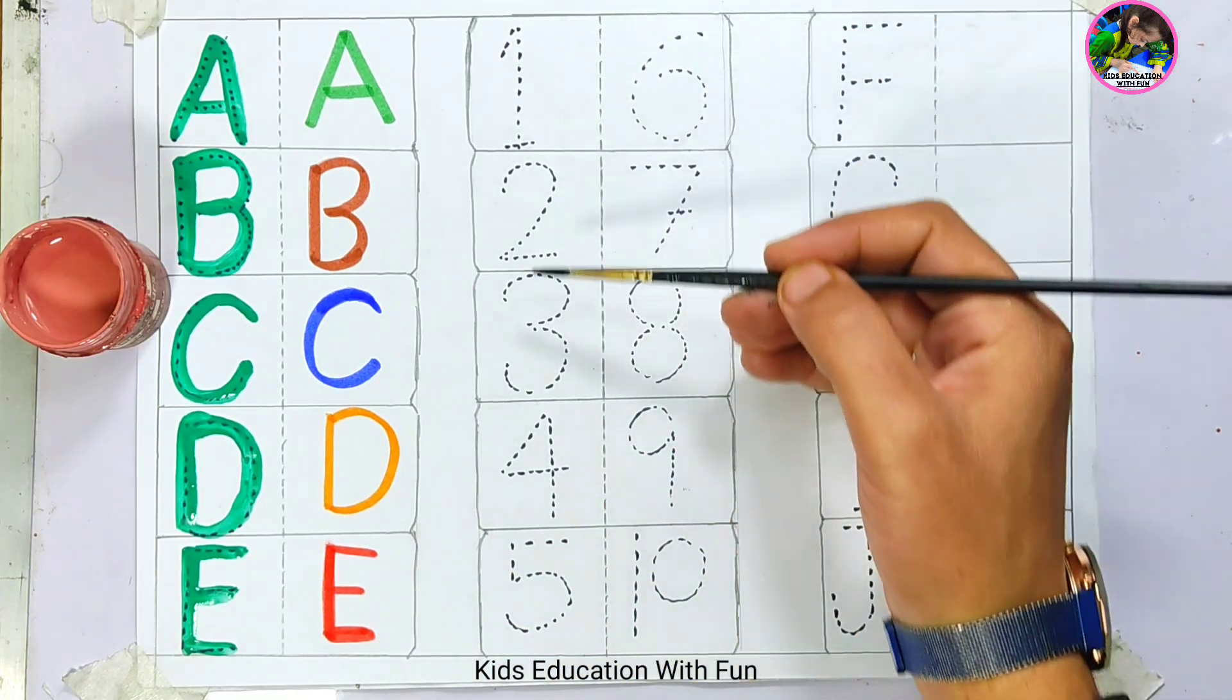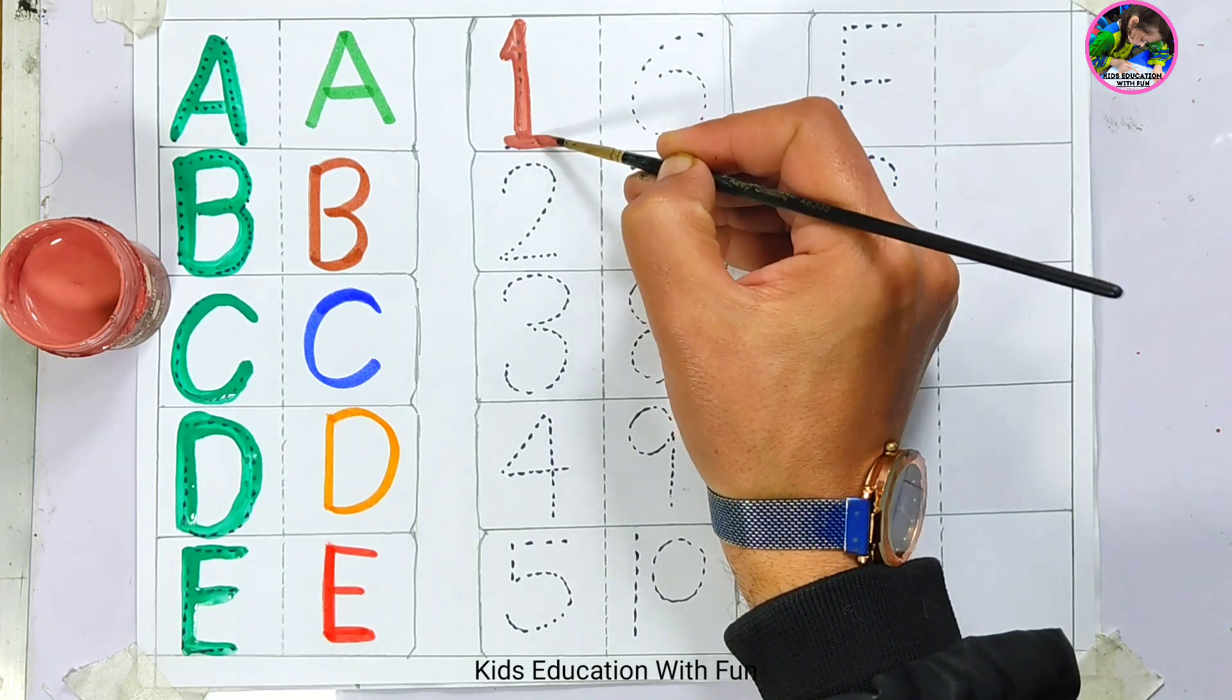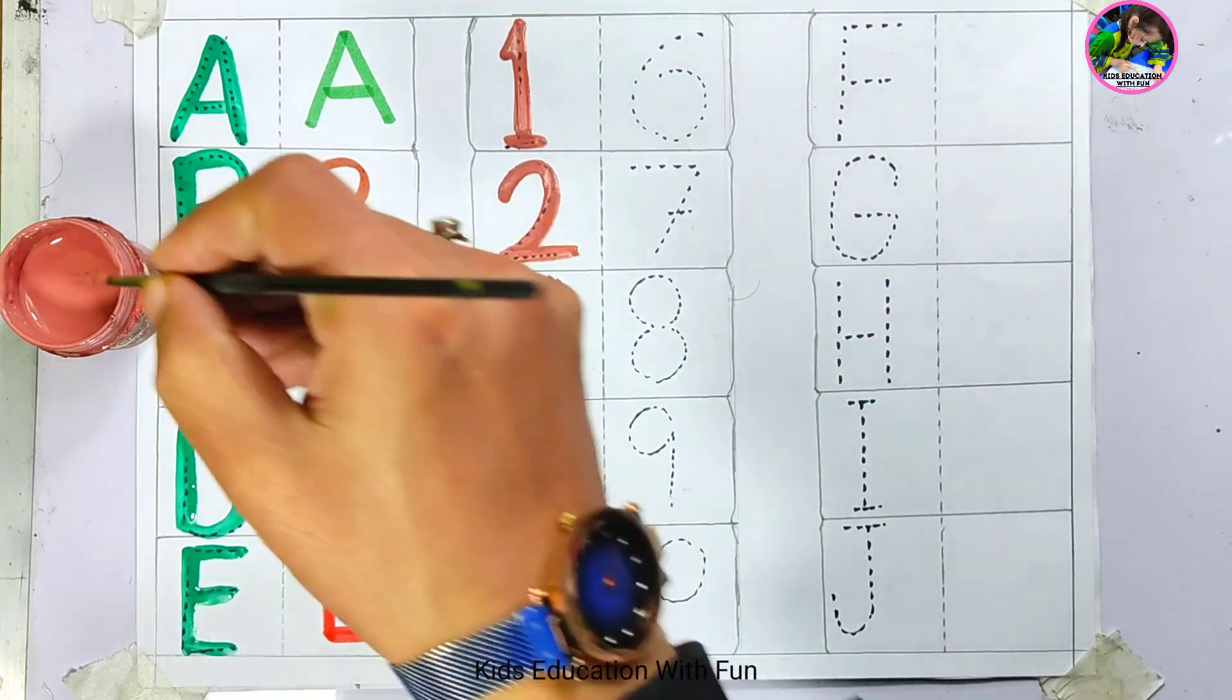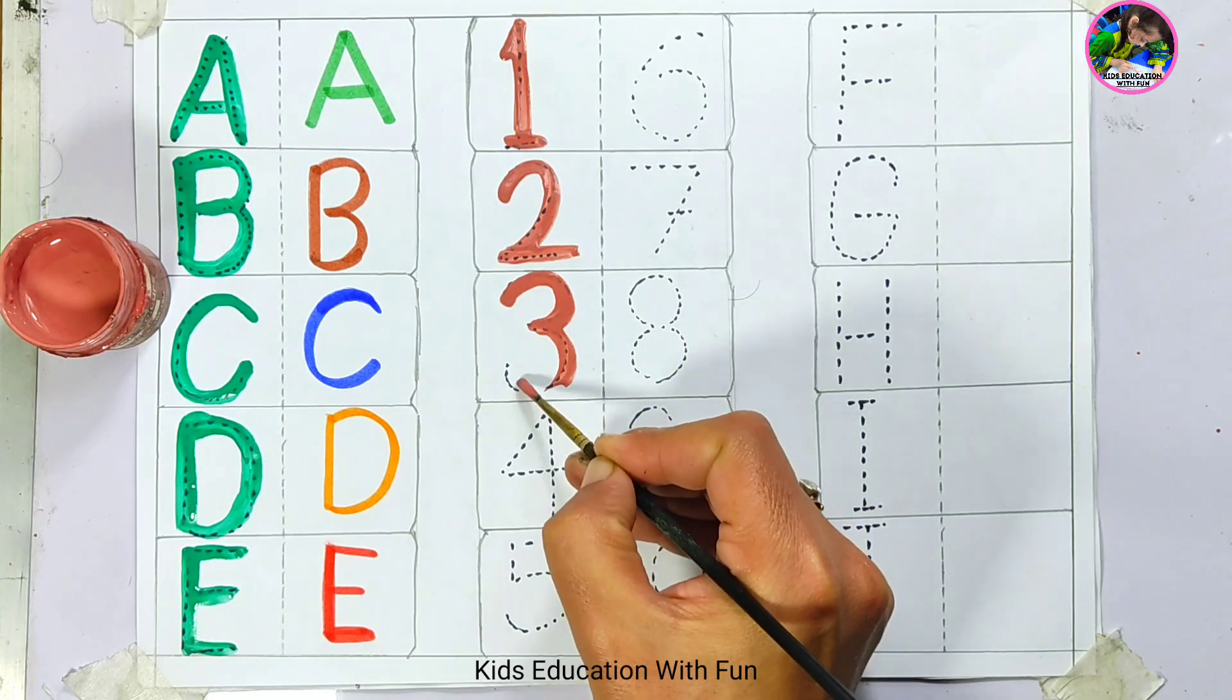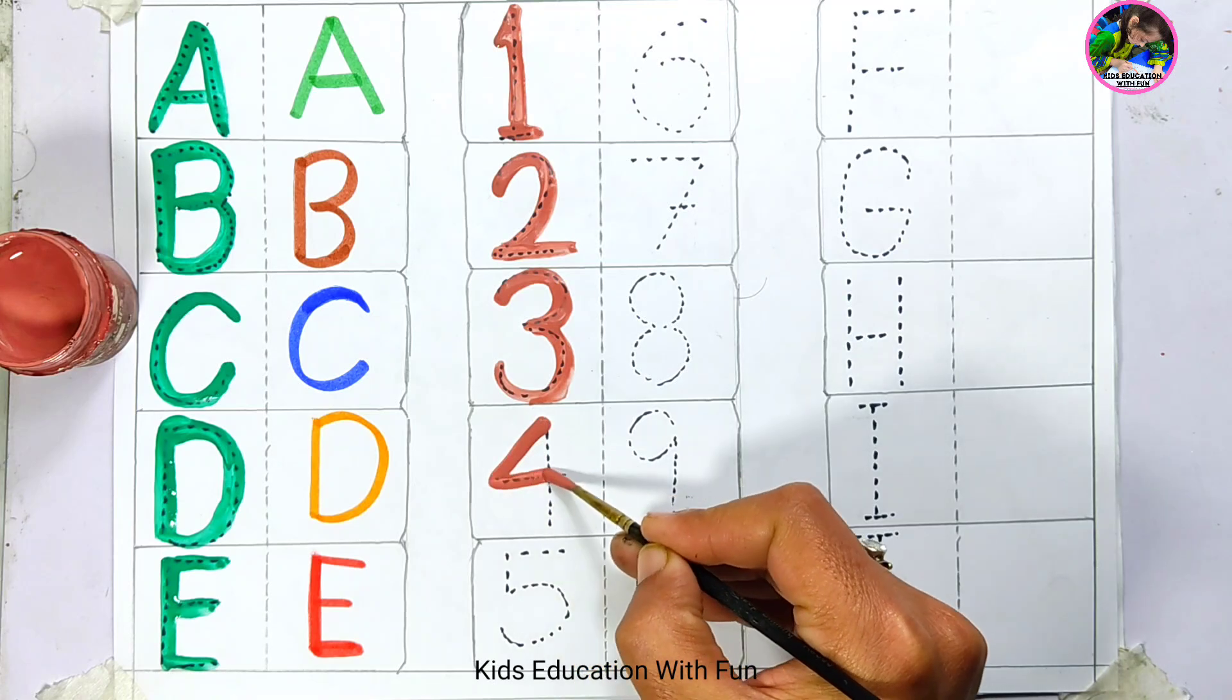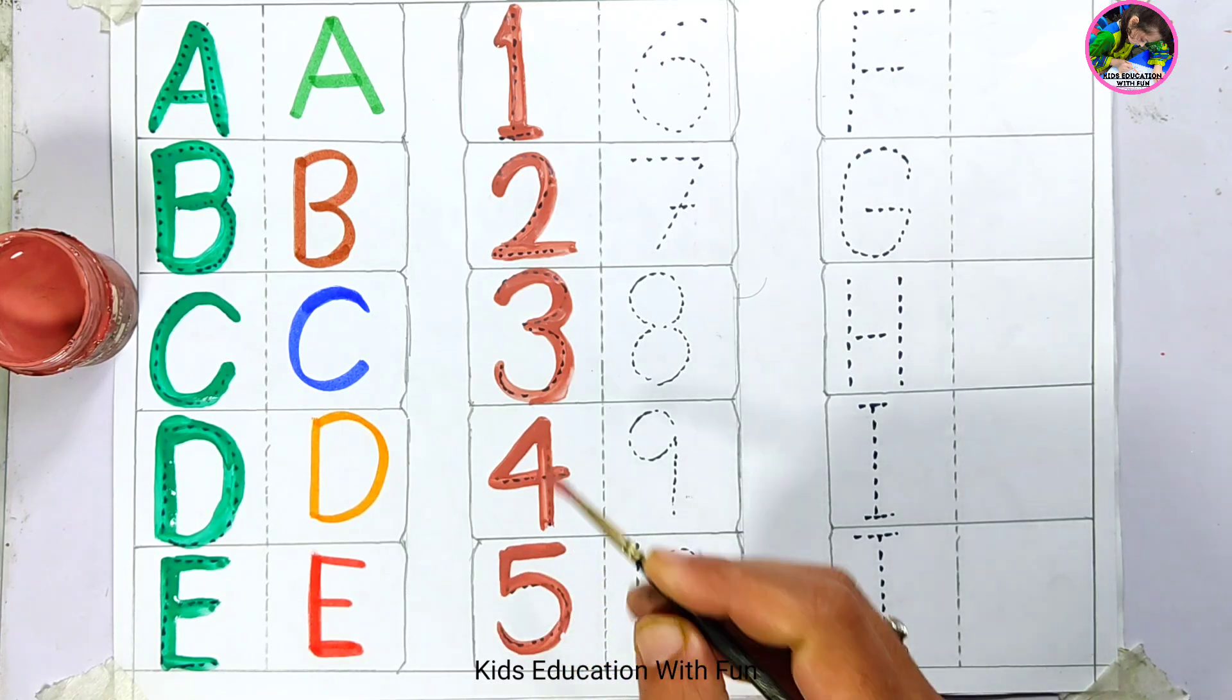Let's practice these numbers. Brown color. Number 1. This is number 1. Number 2. Number 3. Number 4. This is number 4. Number 5.